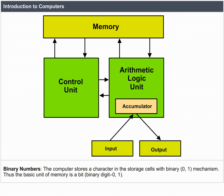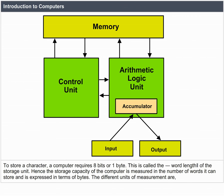Binary Numbers. The computer stores a character in storage cells using a binary 0-1 mechanism. The basic unit of memory is a bit, which is a binary digit of 0 or 1. To store a character, a computer requires 8 bits or 1 byte. This is called the word length of the storage unit.